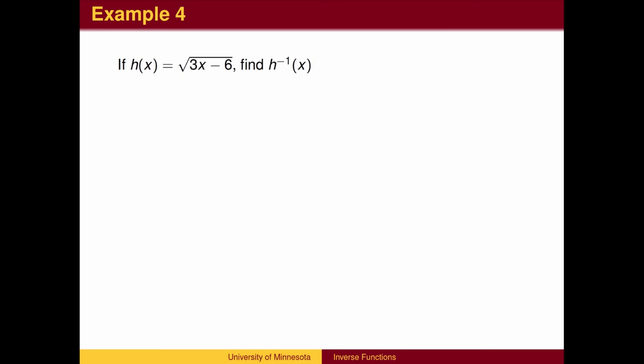Here is a more involved example. We take the input X, multiply by 3, subtract 6, and take the square root. To find the inverse, begin with the equation Y equals square root of 3X minus 6.